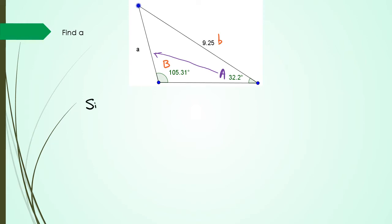Okay so what's my equation? I've got sine A divided by little a equals sine B over little b.